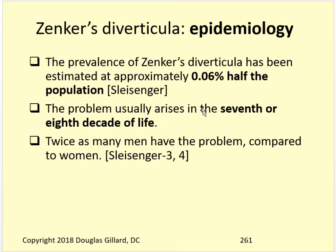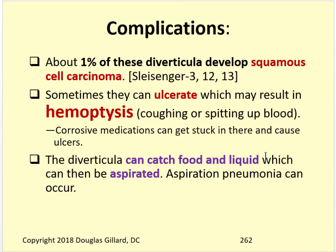Epidemiology: this diverticula occurs in about 0.06% of the population, so it's pretty rare. Boards seem to like this stuff though. Problems usually arise as an older person's problem - seventh and eighth decade of life. Twice as many men have it than women. Complications: about 1% of these can morph into squamous cell carcinoma, probably from chronic infection in the region. They can also cause hemoptysis - spitting up or coughing up blood.